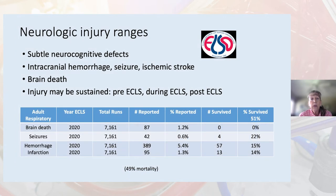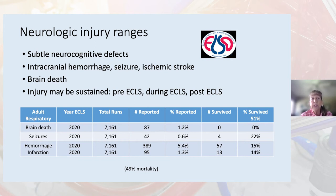From the ELSO registry, this graph shows annual respiratory adult runs, which happen to be the smallest but most growing population of ECMO patients, through 2020. Also from ELSO depicting neurological injury ranges, we see subtle neurocognitive deficits including intracranial hemorrhage, seizure, ischemic stroke, and brain death. This injury may be sustained pre-ECLS, during ECLS, or post-ECLS.